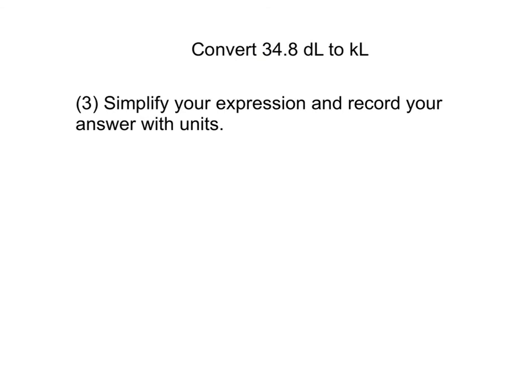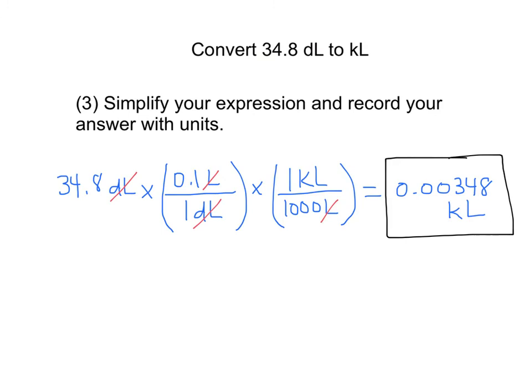If we go back and look at our slide, when we simplify everything—and essentially what that means is we multiply 34.8 times 0.1 divided by one times one and then divided by one thousand—we get our simplified answer, and I boxed my answer just for clarity. We could represent this in normal notation as 0.00348, or we could also represent it in scientific notation as 3.48 times 10 to the negative third kiloliters.